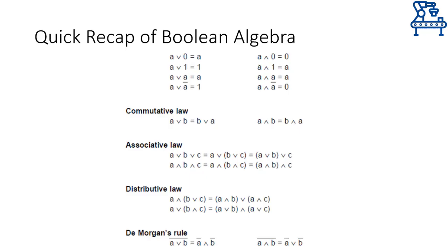This slide lists down the most used Boolean algebra laws and learners are encouraged to go through these laws on their own, as it would be quite time-consuming for me to explain and prove them all here. The laws are not that difficult and you can easily prove them by plugging values in on your own. Using these laws, we can simplify the Disjunctive Standard Form to arrive at a simplified version so that it may be implemented in hardware easily.